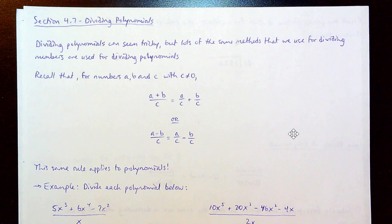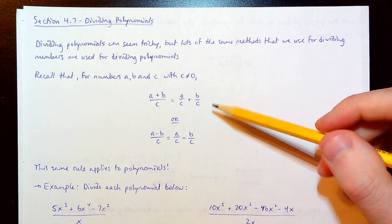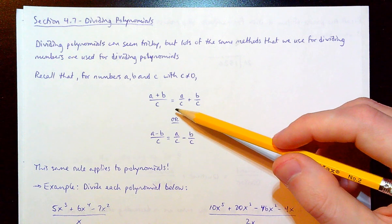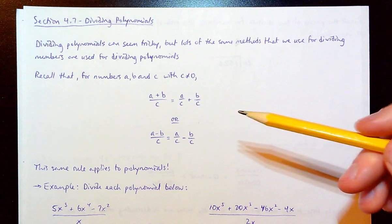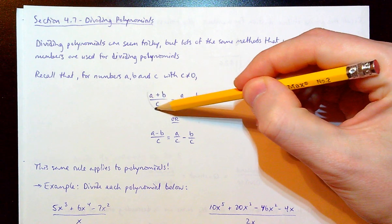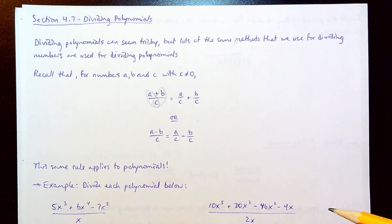But let's start off easy. The first thing I want to talk about is reviewing a basic property of fractions. Recall for numbers a, b, and c, with c not being zero: whether you're adding or subtracting, you can rewrite one fraction with the sum or difference on top as the sum or difference of two separate fractions.